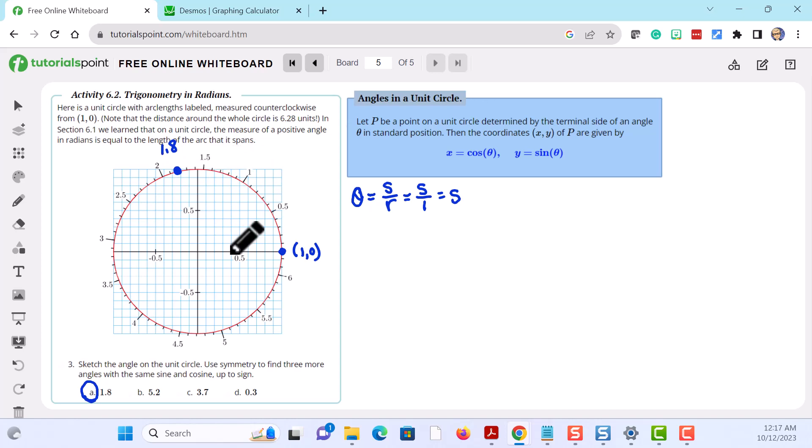And to sketch the angle, remember an angle has an initial side along the positive x-axis and then its terminal side goes through the point on the unit circle. And we start at the positive x-axis, rotate counterclockwise, and this would be our theta 1 which is 1.8. So theta sub 1 is equal to 1.8.